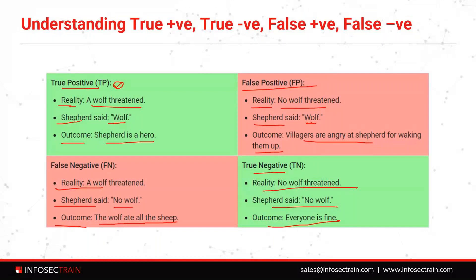False negative: in reality the wolf was there, there was a danger, but Shefford said 'no, no, everything is fine, there is no wolf, there is no danger.' So he gave a false notification. The outcome is the wolf ate all the sheep — there was a wolf in the village in reality, but Shefford said there is no wolf, and the wolf ate all the sheep.